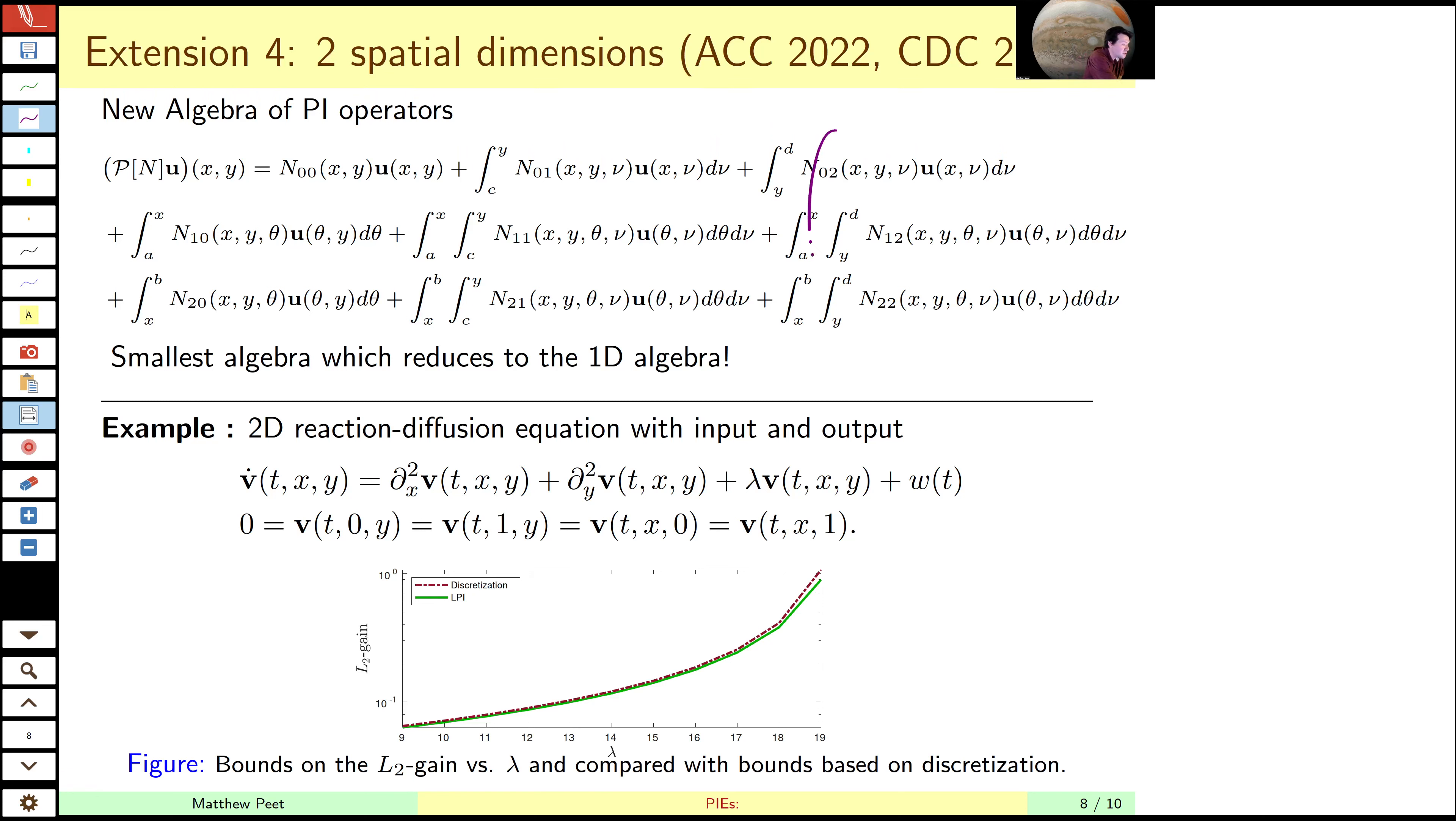This is actually the simplest we can do while still maintaining the algebraic structure of our operator. So now we have nine parameters. But this allows us to do things like analyze a reaction diffusion equation.